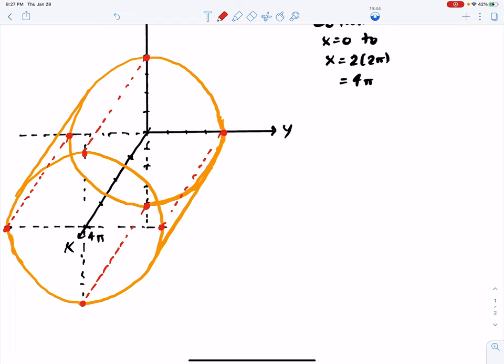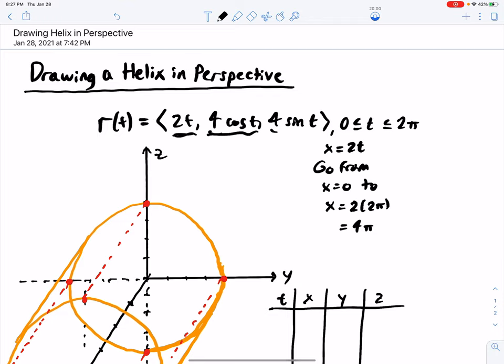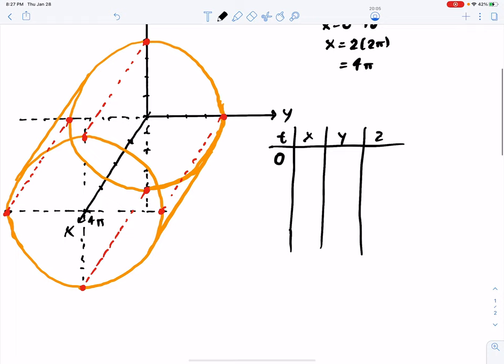So after we've got that kind of set up, now we're going to go ahead and go to our t chart. So we've got your t, we've got the x, and the y, and the z. Let's recall that the x was 2t, the y is 4cosine(t), and z is 4sine(t). So we use the quadrantal angles of 0, π/2, π, 3π/2, and then back to 2π. The x will go from 0, we'll get a π, a 2π, 3π, and a 4π, as we progress through the quadrantal angles.